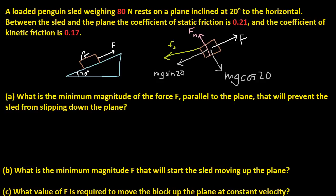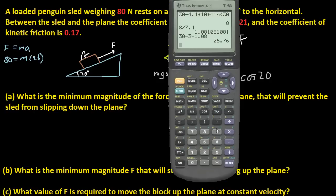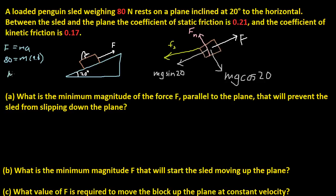Let's figure out what our mass is. It's 80 newtons, and since force equals mass times acceleration, 80 equals mass times 9.8. So 80 divided by 9.8 gives us our mass. Mass is approximately 8.16 kilograms. I'm going to store this to alpha M for mass.